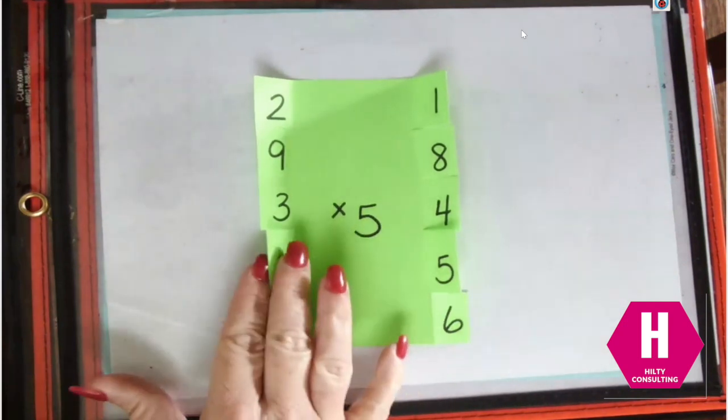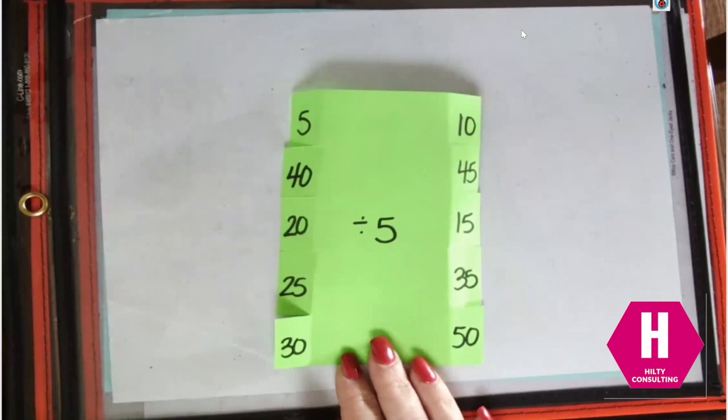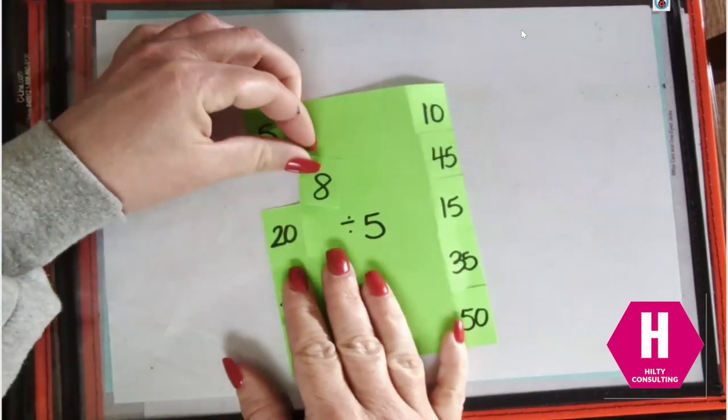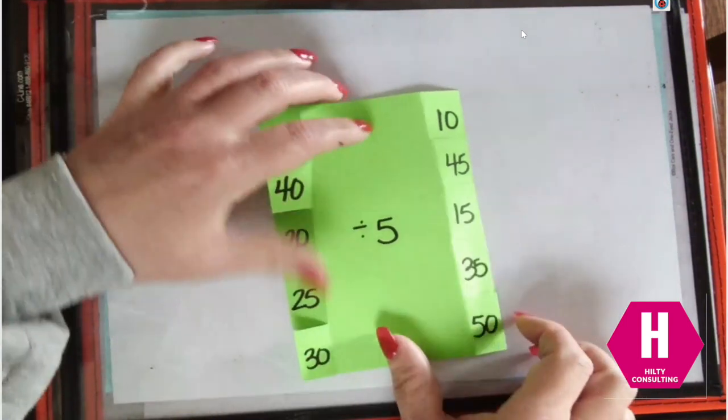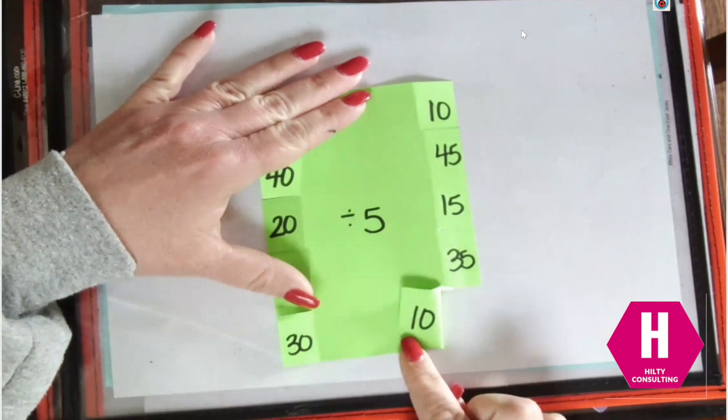The reason why this card works is when you flip it over to the back, we have the inverse operation of division. Now we're going to divide by 5. If I want to know 40 divided by 5, I fold my tab in and I can see the quotient is 8. 50 divided by 5, fold this tab in and I can see it is 10.